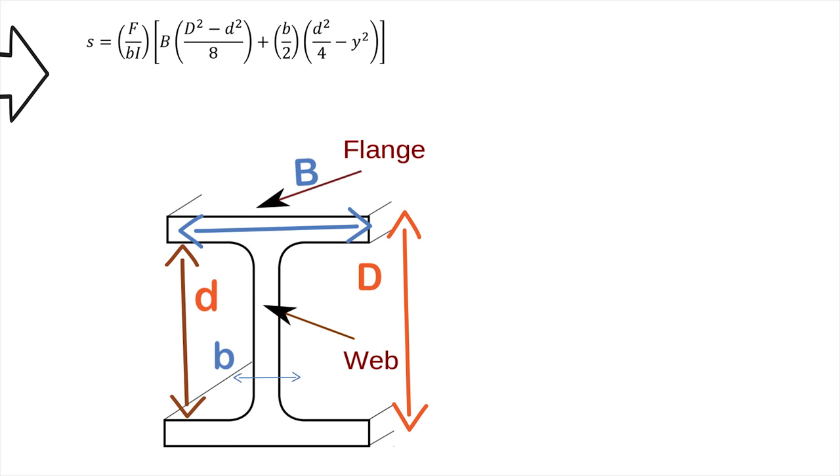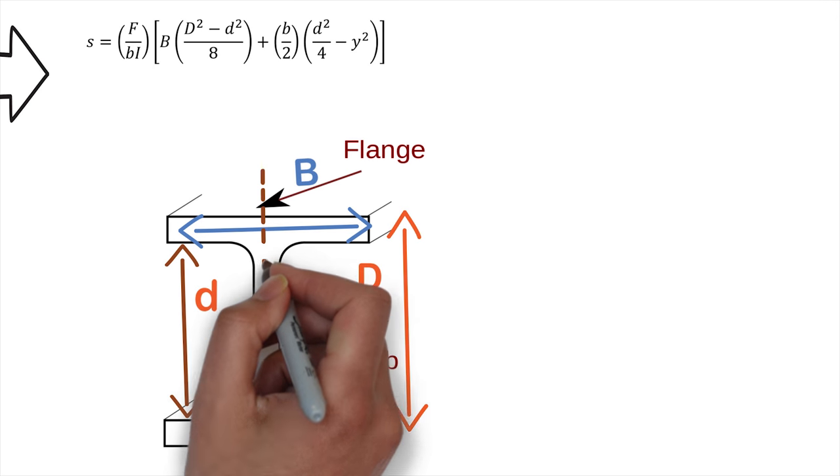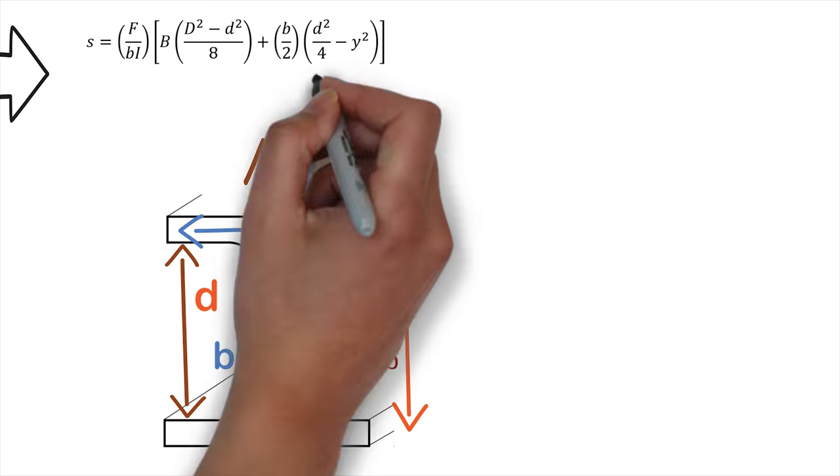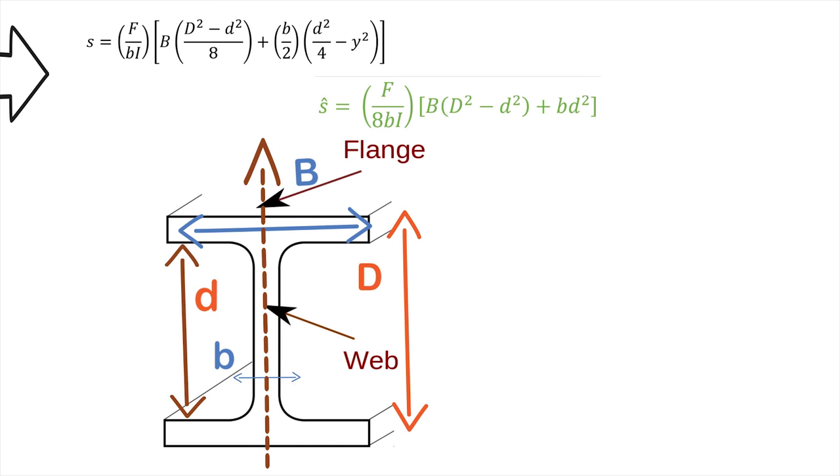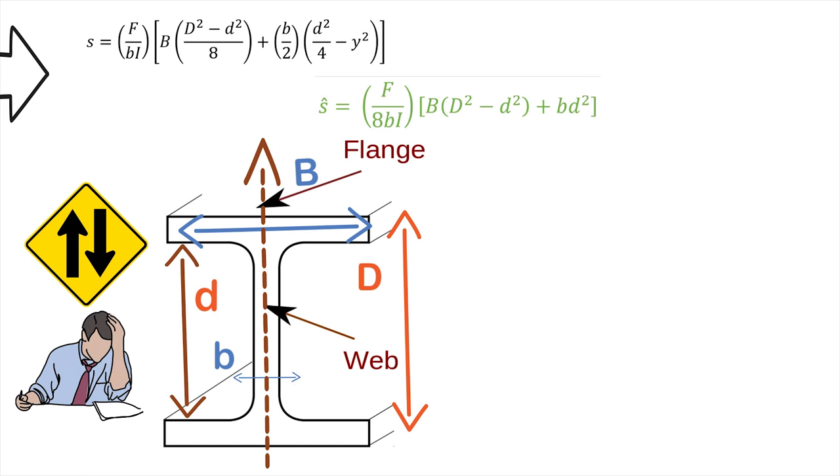Capital D and small d denote the length of total section and that of the web respectively. The equation of shear stress is given as, so the maximum shear stress at the neutral axis is given as, showing that the shear stress in the flanges varies from a maximum at the top web to zero at the outer tips.